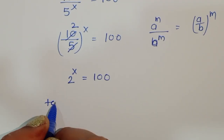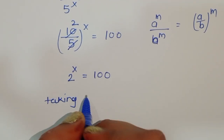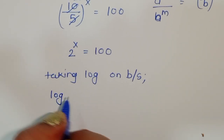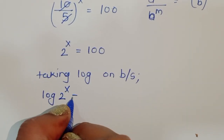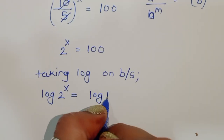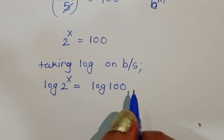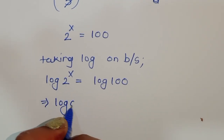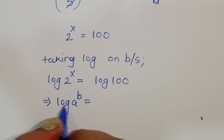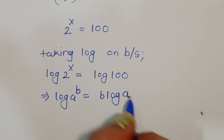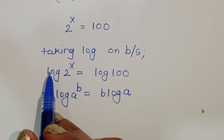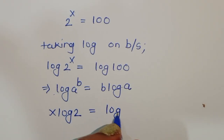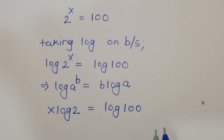Now, 2^x = 100, and we have to find x. We solve this using logarithms — taking log on both sides, we get log(2^x) = log(100). Using the formula log(a^b) = b·log(a), we write x·log(2) = log(100).